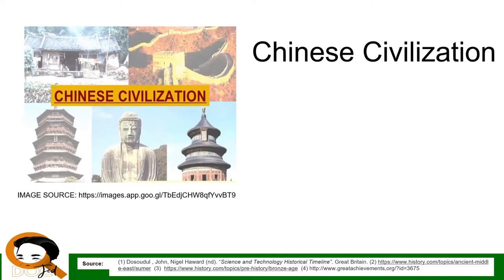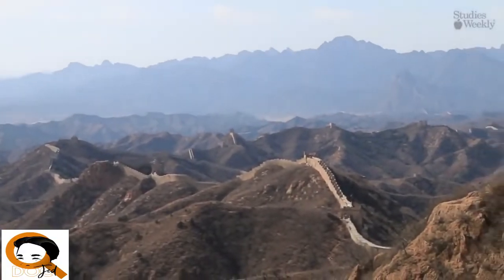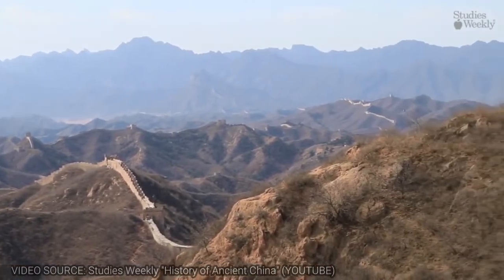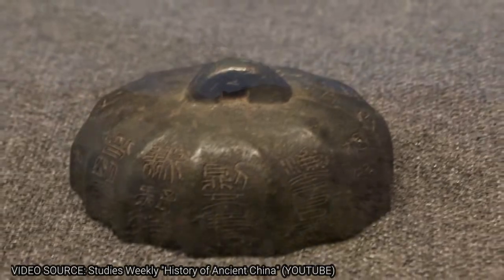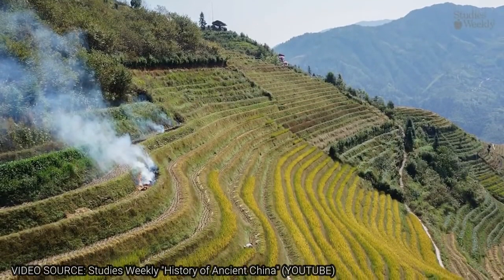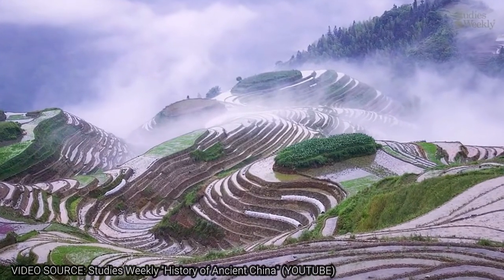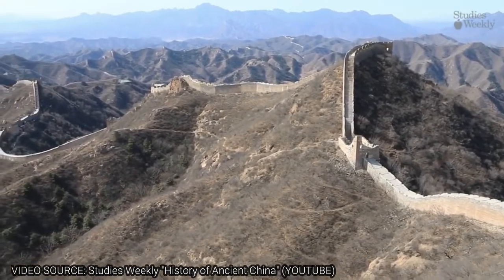The Chinese Civilization: China, also known as the Middle Kingdom, is considered to be the oldest civilization in Asia and is famous for its silk trade, tea production, and the invention of gunpowder. In Europe, the recipe for making gunpowder appeared in a book in 1242. Roger Bacon (1214–1294), an English friar and philosopher, was the first to describe the process and its formula. The Great Wall of China is a showcase of the Chinese Civilization.